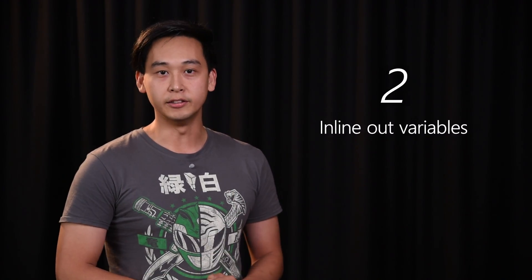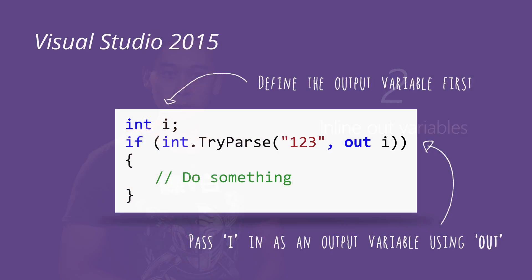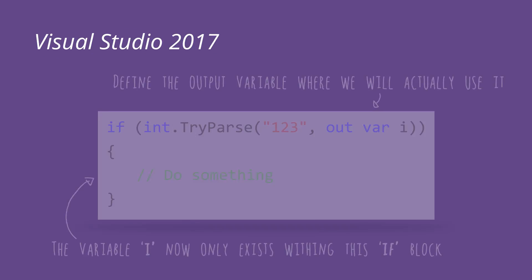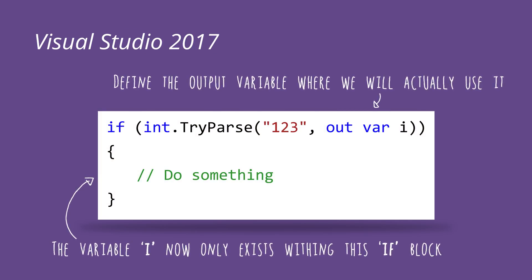My second favorite feature is inline output variables. In the past, when you needed to use something like a try-parse function, you needed to declare the variable first, then pass it in as an output variable. With C# 7 it simplifies this to one line — you just say try-parse whatever your string is and then say `out int i`, and it only exists within the scope of that try-parse. It makes your code really concise and easy to read.